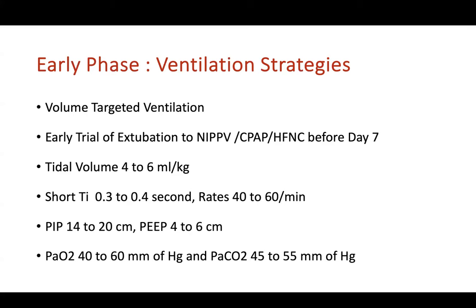Short inspiratory times of 0.3 to 0.4 seconds and lower rates of 40 to 60 per minute are recommended. We should give lesser pressures — a PIP of 14 to 20 and PEEP of 4 to 6 — to prevent alveolar damage from volutrauma. Target PaO2 can be on the lower side with permissive hypoxia and permissive hypercapnia, keeping pH above 7.25, PaO2 between 40 to 60 mmHg, and PaCO2 between 45 to 55 mmHg.